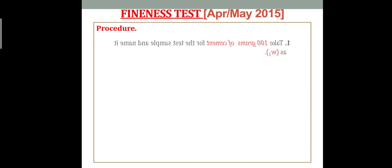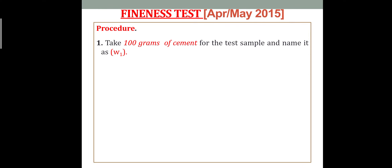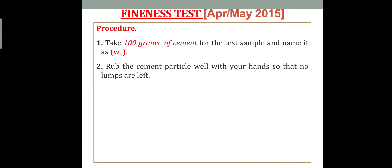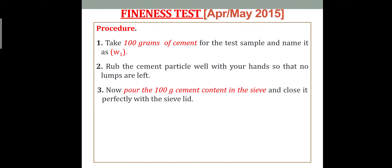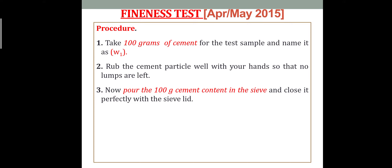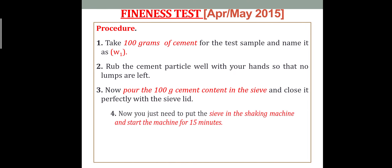The procedure is: first, take 100 grams of cement — this is marked as W1. Make sure there are no lumps in the cement; it should be completely powdered. After that, pour the cement into the 90 micron sieve.